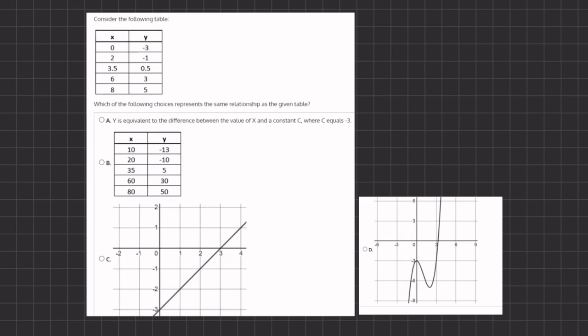So let's take a look at our graph, I mean at our table, and see the relationship between x and y. Now to get from 0 to negative 3, it seems like we are subtracting by 3, and let's see if this pattern continues.